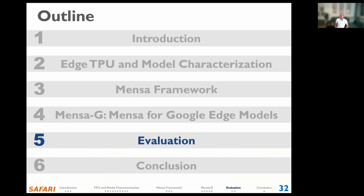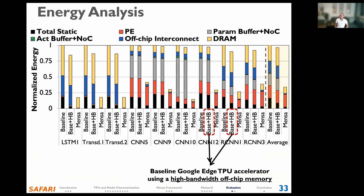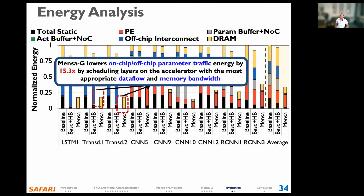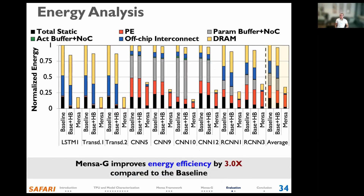We analyze the inference energy of MENSA-G against the baseline Edge TPU and a baseline Edge TPU using high-bandwidth off-chip memory. Values are normalized to the baseline Edge TPU system. MENSA-G's placement of accelerators and careful dataflow design reduces energy from on-chip and off-chip parameter traffic by 15.3x on average compared to the baseline. MENSA-G also reduces dynamic energy of on-chip buffers and NoC by almost 50x compared to the baseline system with high-bandwidth memory. Overall, MENSA-G improves inference energy by 3x compared to the baseline Edge TPU.